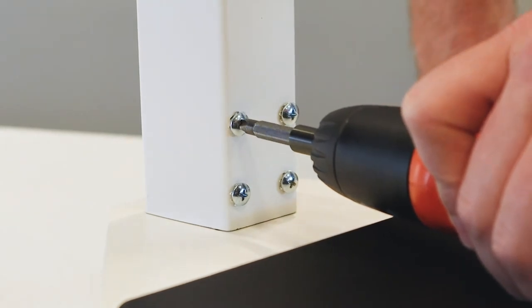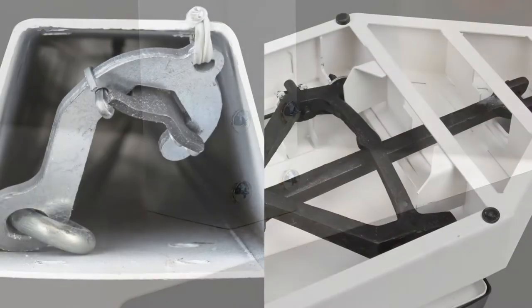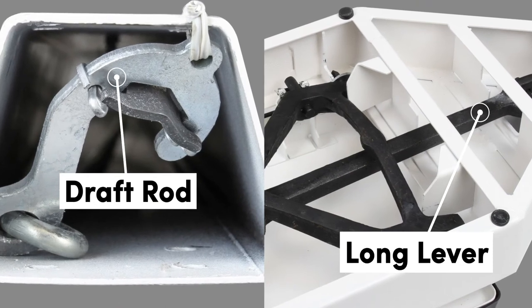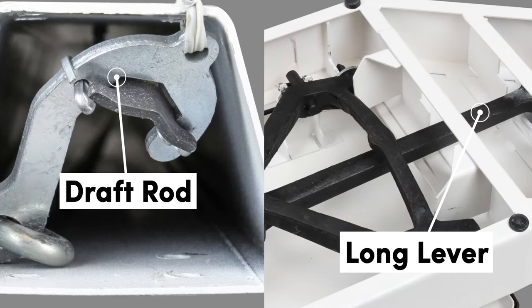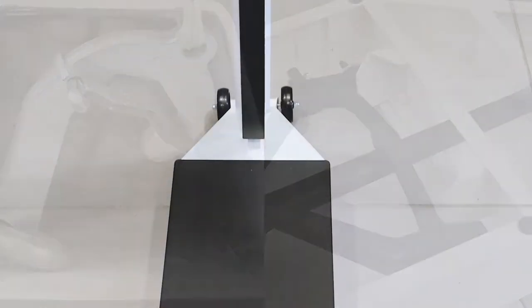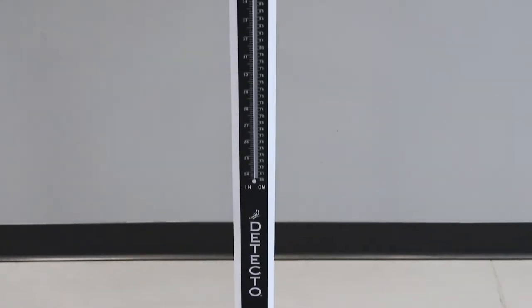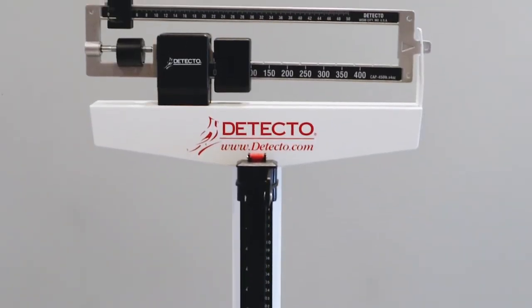Once the column is attached to the scale base, the draft rod located inside the scale column must be attached to the long lever in the scale base. The draft rod is what connects the way beam on top to the scale base down below and transfers pressure when weight is on the scale up the column to the beam for measurement.